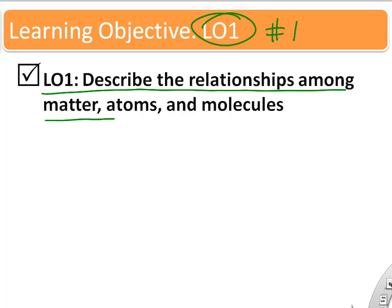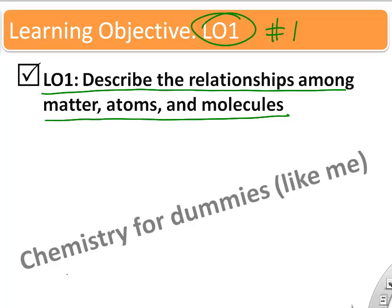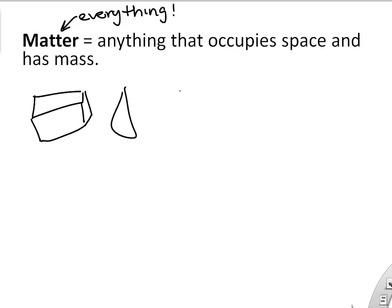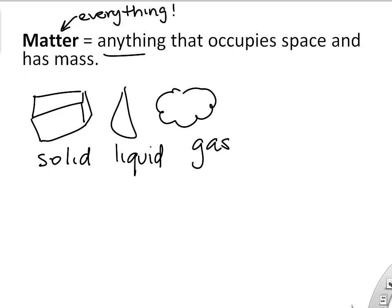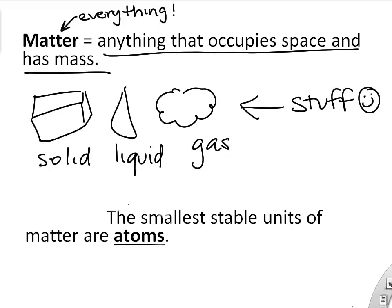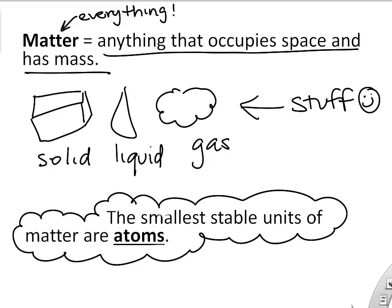The first learning objective is to describe the relationship among matter, atoms, and molecules. This will hopefully be a very easy version of chemistry. Matter is pretty much everything around us — it occupies space and has mass. Matter comes in solid, liquid, and gas. We'll talk about the stuff we're made of, what we interact with and eat, and what's found in the body.